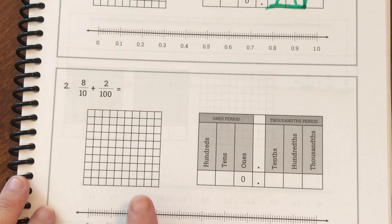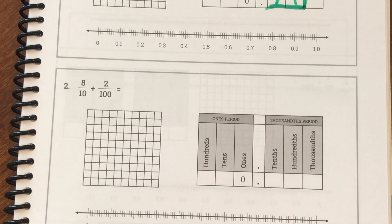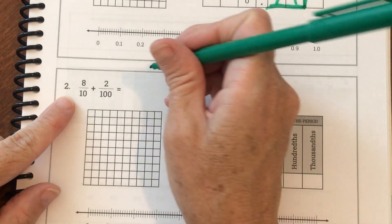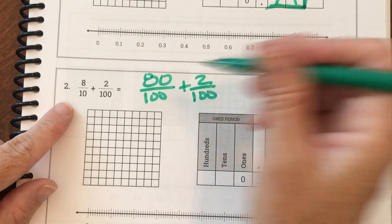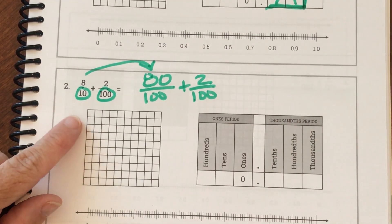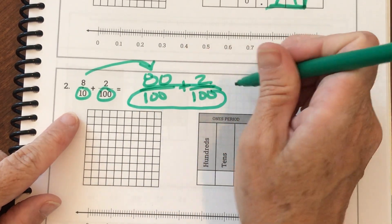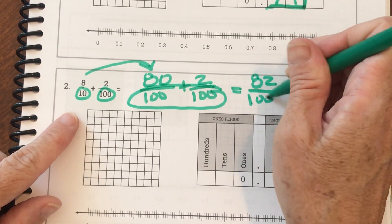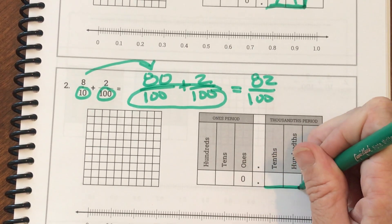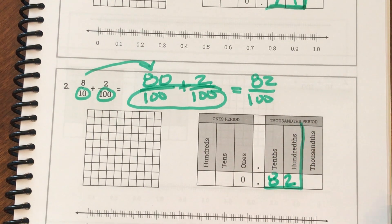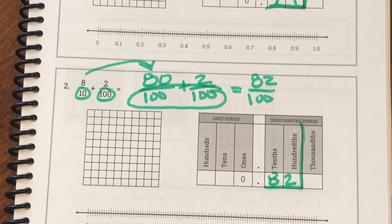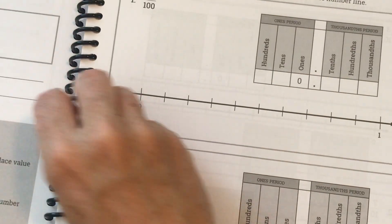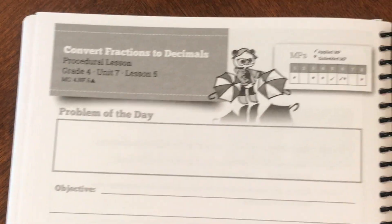I've already done number two for you — this is the one we already did. Eight tenths is the same as eighty one-hundredths plus two one-hundredths. I had to change that because these were different denominators. Now that they have the same denominator we can add them, so we have eighty-two one-hundredths. We're going to write it right here as 0.82 — eighty-two hundredths — and they will match. Ladies and gentlemen, pause your video and do these next two problems on your own. When you're done, turn the page and we'll do lesson five together.